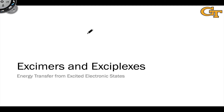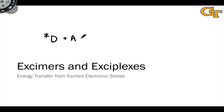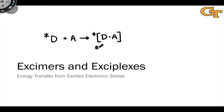The subject of this video is exomers and exaplexes. We first encountered the idea of an exaplex in discussions of the potential energy surfaces of Dexter energy transfer. In that context, we had an excited molecule that was an energy donor, D star, combining with an acceptor molecule in a collision. When the molecules collided, a new type of structure was formed: a complex of D and A in an excited state, represented as [DA]*. This D-A star structure is what's known as an exaplex — an excited state complex.